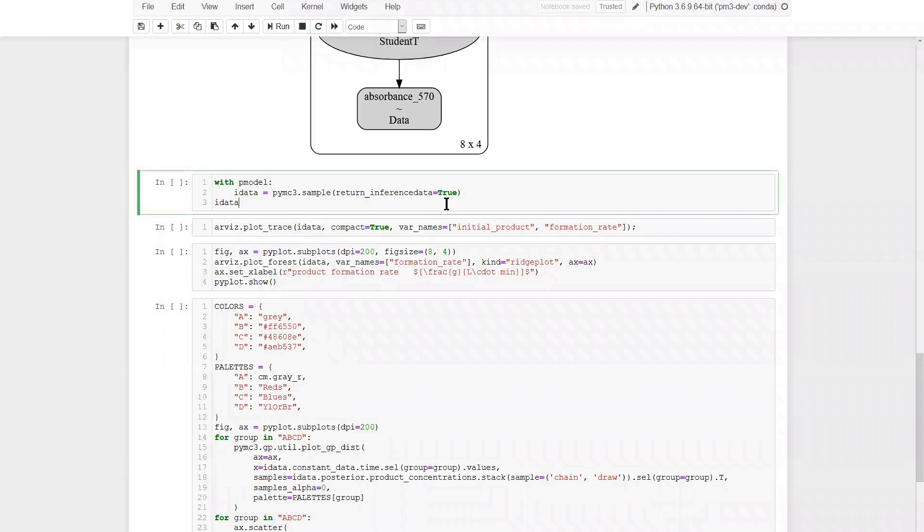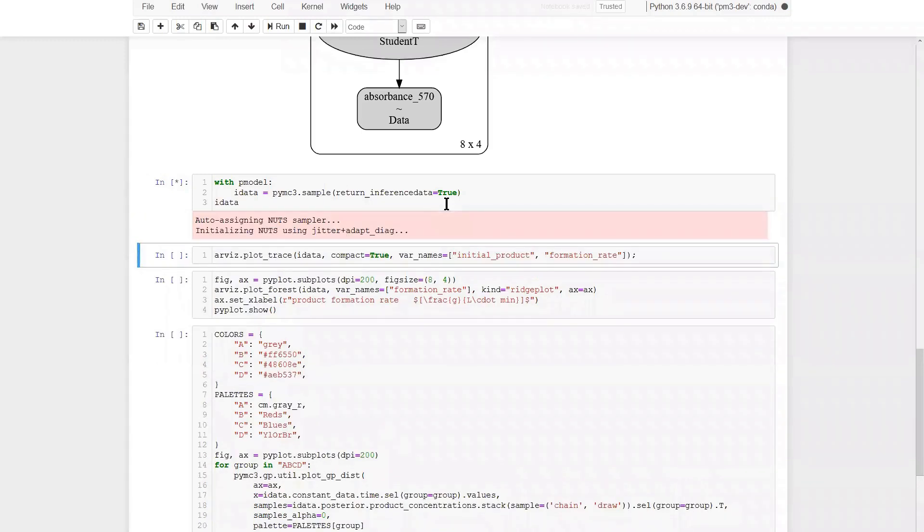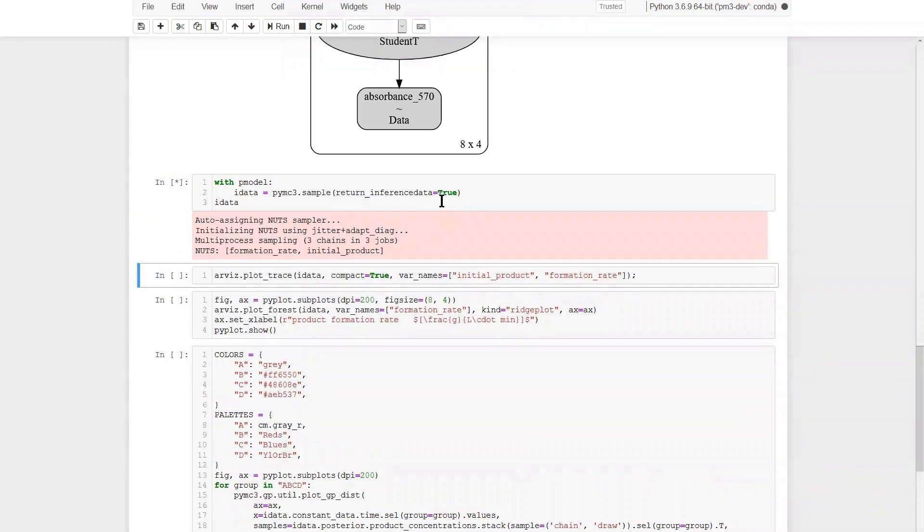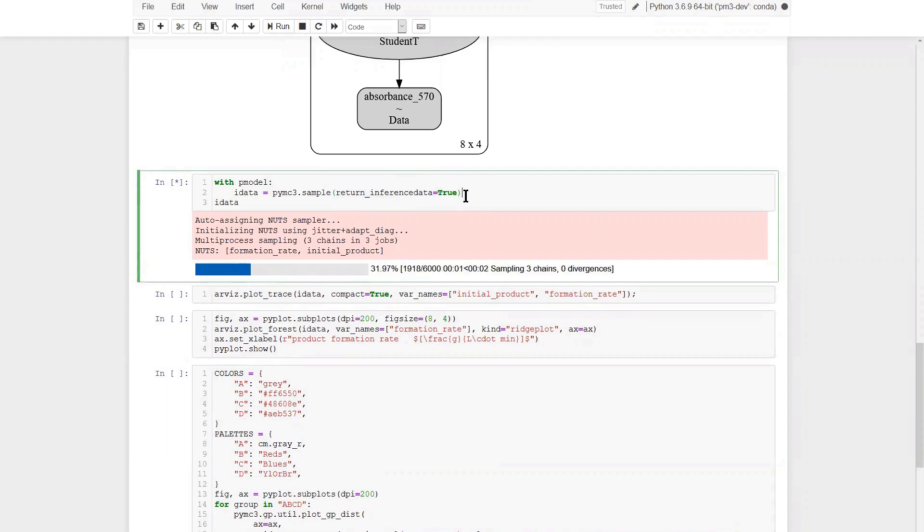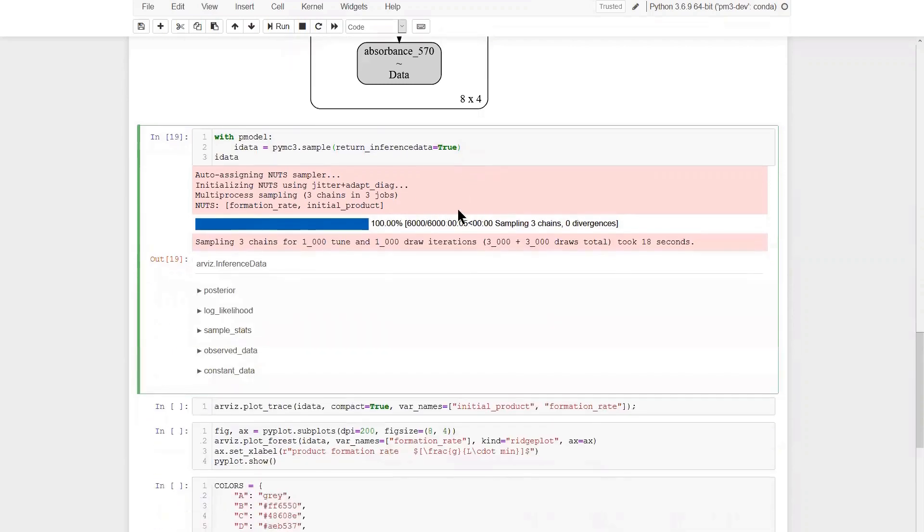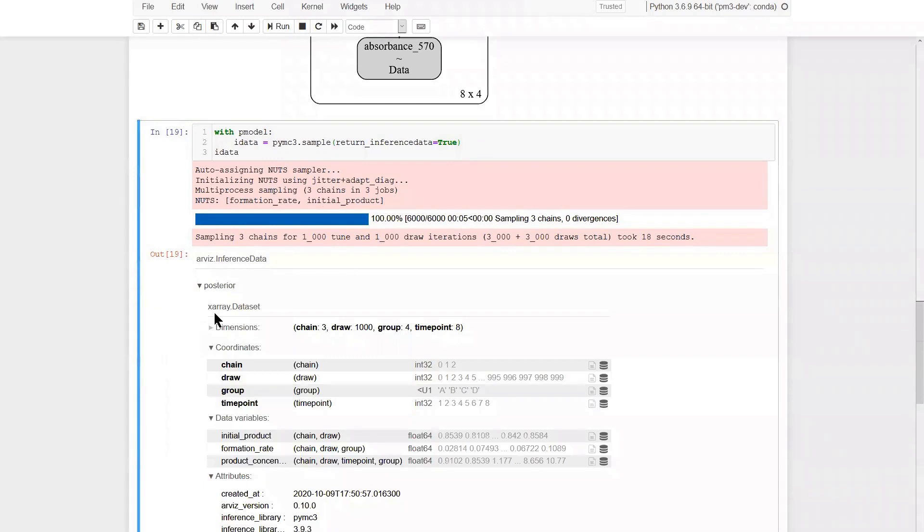Now, we can hit the inference button and sample this multilevel regression model with NUTS. We specify return inference data, so we already get back the ArviZ object from the sampling. Here, we can see that the posterior now has named coordinates: chain, draw, group and time point. Also the product concentrations have these named dimensions now.